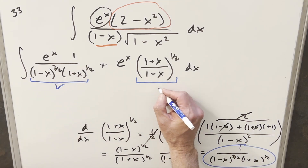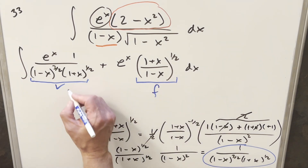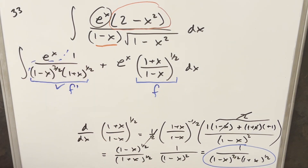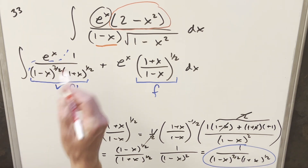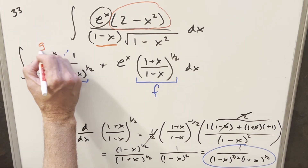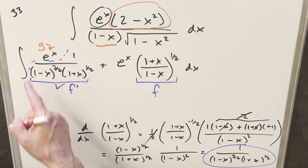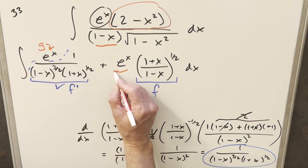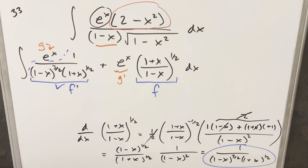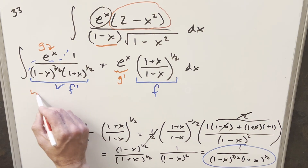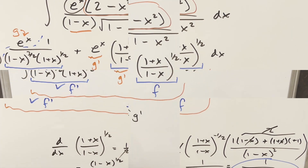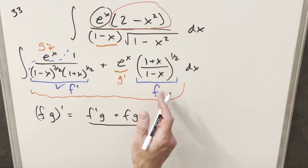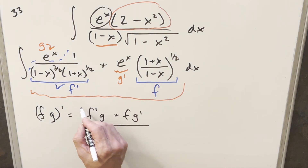Back to this integral — let's just label this piece here f. We just determined that this here must be f prime, just this part, not including the e to the x. Then I can label the e to the x as g. If we take the derivative of that, that's just e to the x, so we have our g prime right here. It turns out after quite a bit of algebra, this whole integral is just the product rule. Looking at our product rule, we see that what we have right here is exactly what we have in our integral.